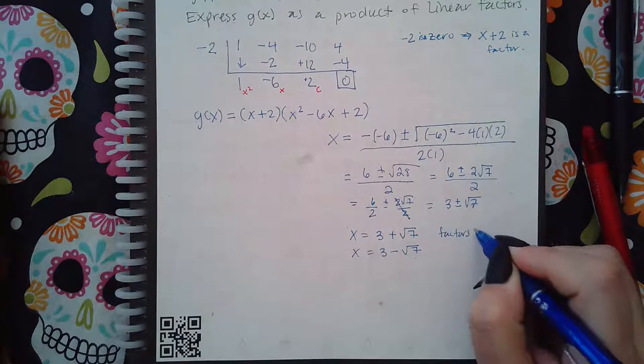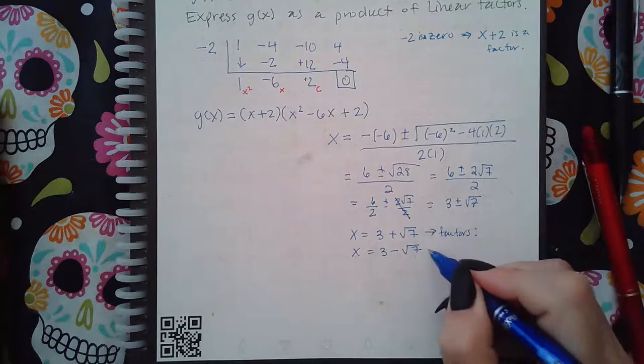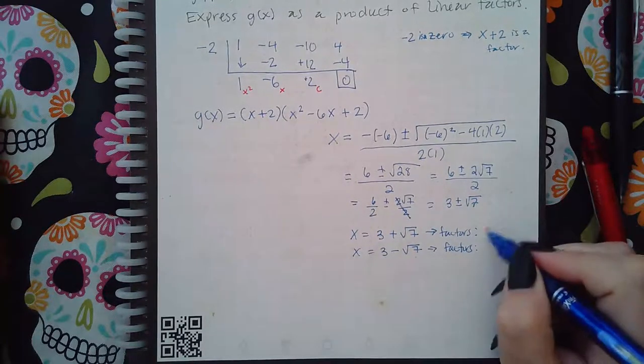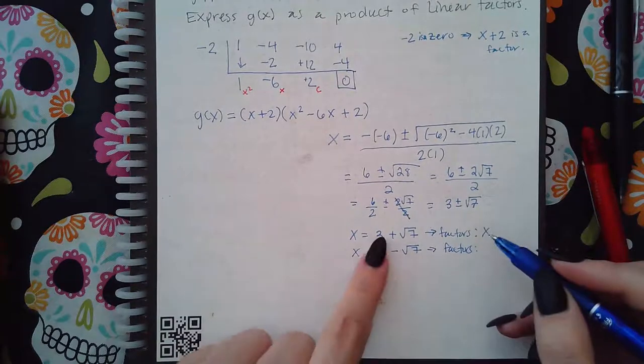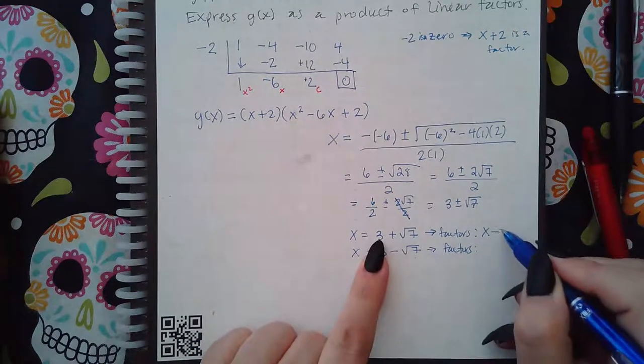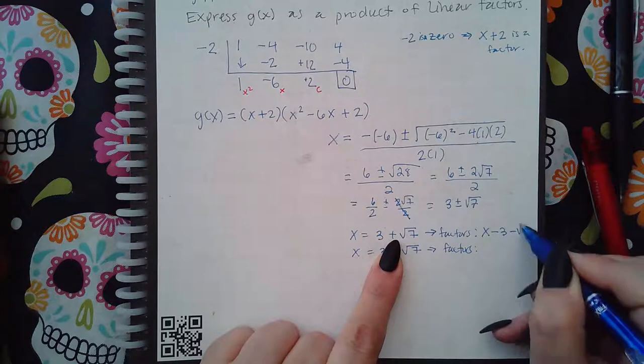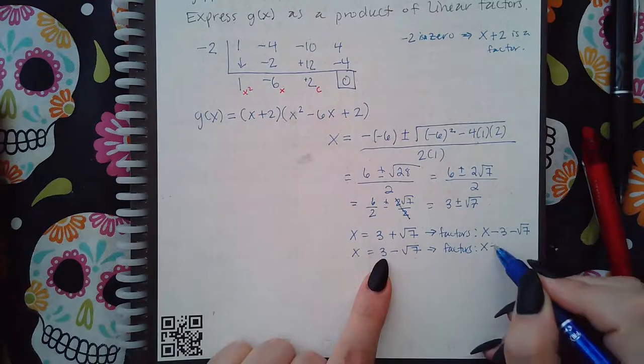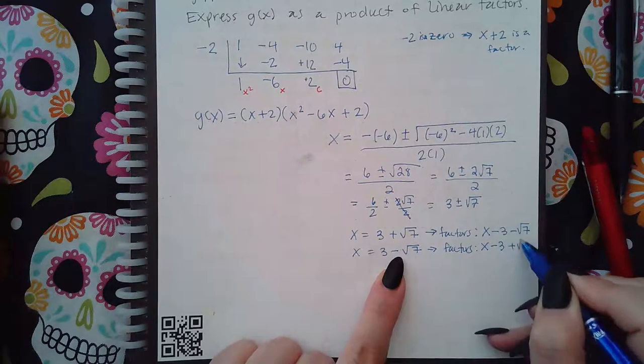Okay, the factors are going to be x and then the opposite signs. So minus 3 and minus square root of 7. For this one, it will be x minus 3 and plus square root of 7.